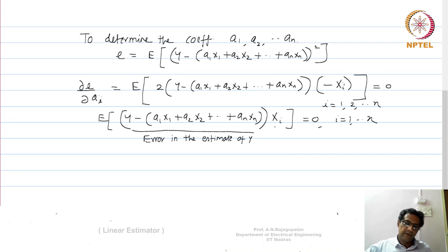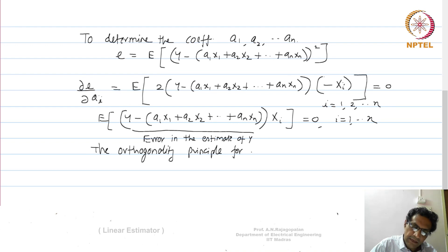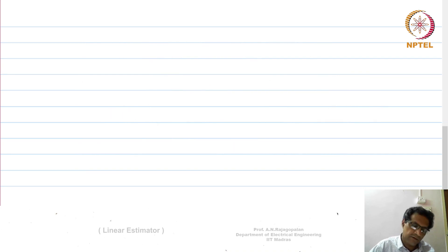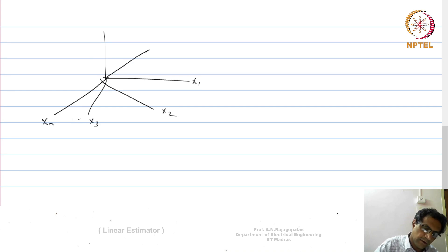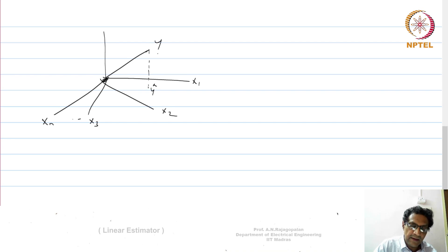This is called the orthogonality principle for the linear mean square estimator. The geometric interpretation is: if you have random variables x₁ to xₙ spanning a space, and y sits somewhere outside that space, then ŷ is the projection of y onto the span of x₁ to xₙ, and the error (y − ŷ) is orthogonal to that space.